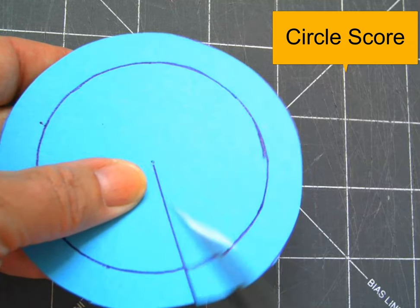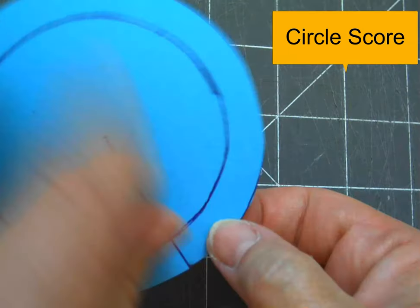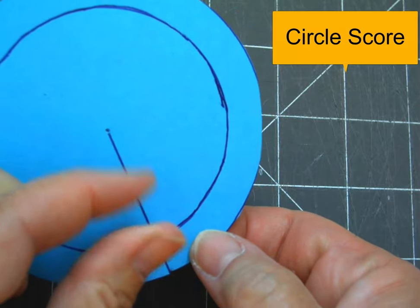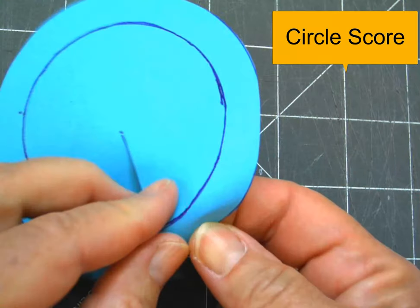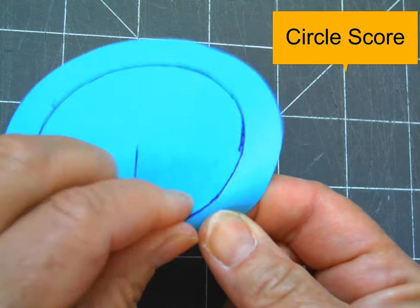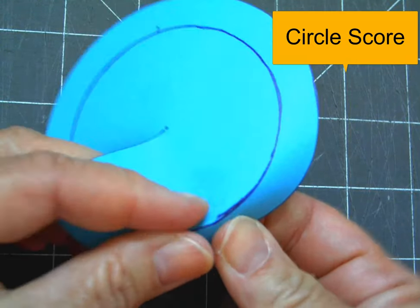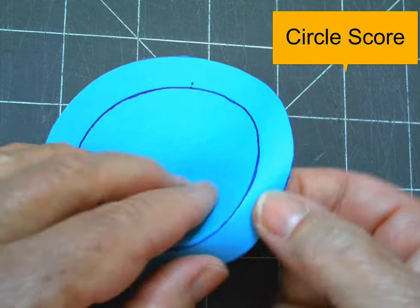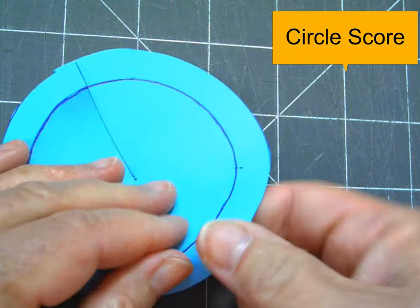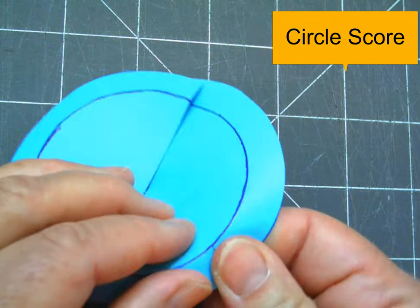Now I need to do that little pinchy fingers curved fold again. Don't try to fold the whole thing at once. Just run your fingers along the edge, pinch it, and move along.